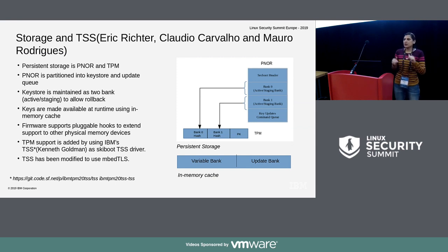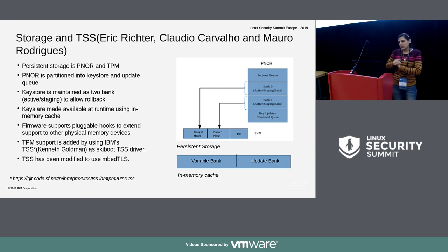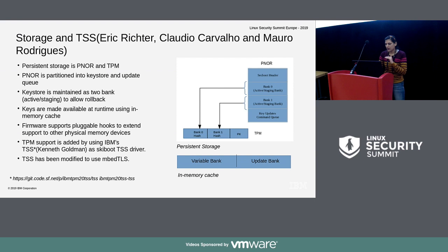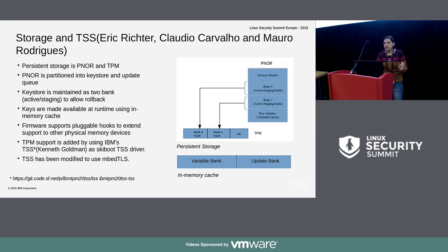For PNOR storage, we have two storage options: PNOR and TPM. TPM provides security and PNOR provides more space. PNOR is divided into two parts: one for the keys and one for the update command. Whatever key updates have to be done, data is stored into the update bank partition. The key store is maintained as two banks so that if you need to roll back because of any failure, you can do that. There is also an in-memory cache maintained by the firmware itself which is available at runtime.